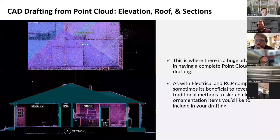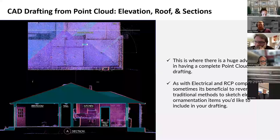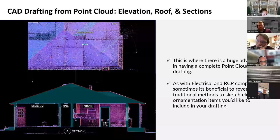Now let's talk about drafting other views such as an elevation from the point cloud. When working in a 2D drafting environment, it's important to have your point cloud well oriented in the drafting space and to be well practiced at manipulating the coordinate system, views, and point cloud sections. This is where there is a huge advantage in having a complete point cloud for drafting — provided you are able to access the roof and scan it, you will have a complete picture of not only the roof behavior but also every height you need to properly draft your roof, exterior elevations, and any section you might need. Sometimes it's beneficial to revert back to traditional methods to sketch elevation ornamentation items.